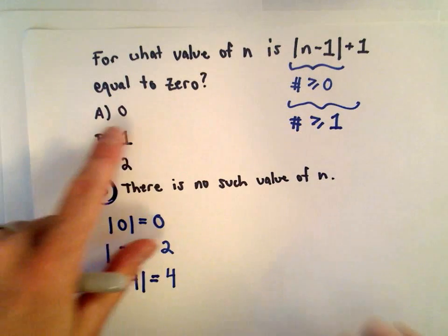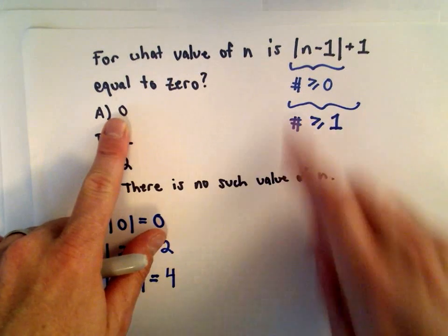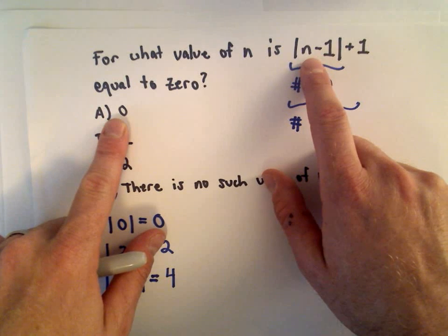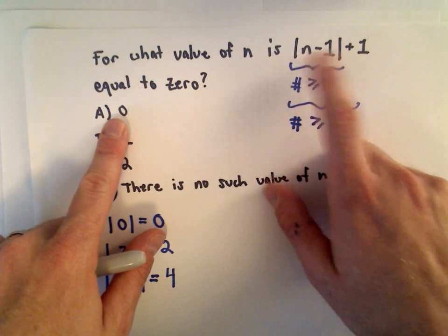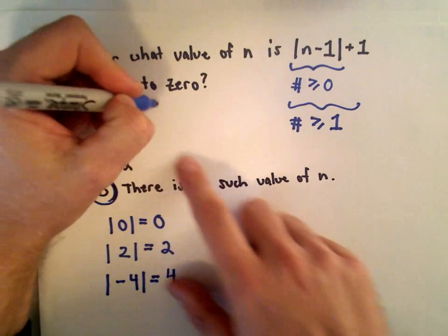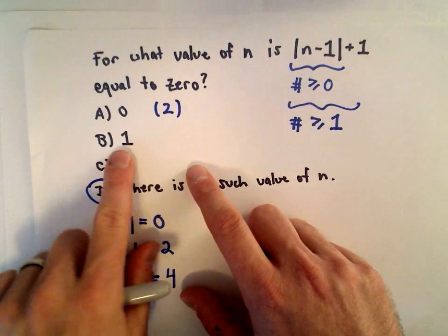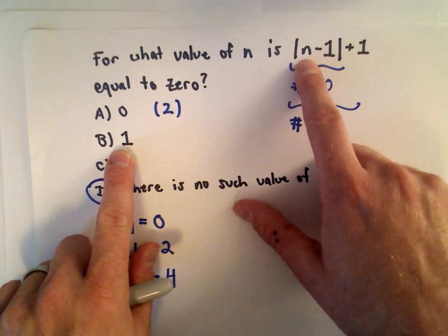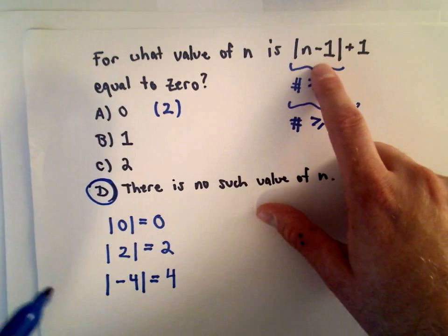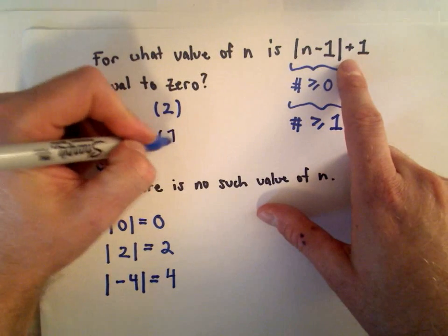And again, you could check, if you substitute in 0, you would have 0 minus 1, which would be negative 1. The absolute value of negative 1 is positive 1, so you'd have positive 1 plus 1. If you substitute in 0, you'll actually get the value of 2. If you substitute in n equals 1, 1 minus 1 is 0. The absolute value of 0 is 0, plus 1 would give you 1 as a value.